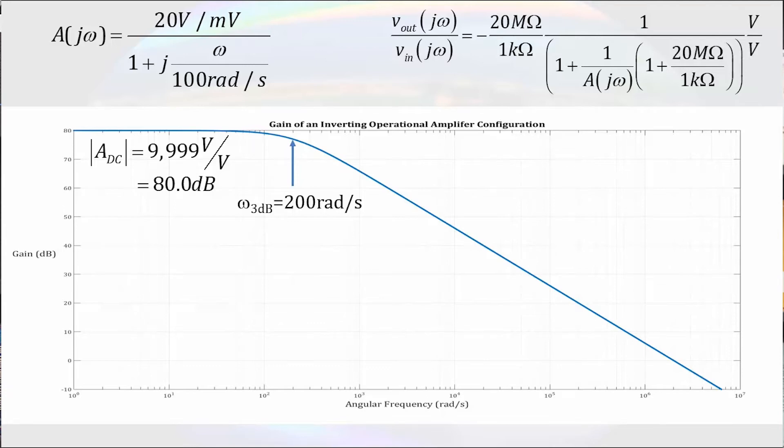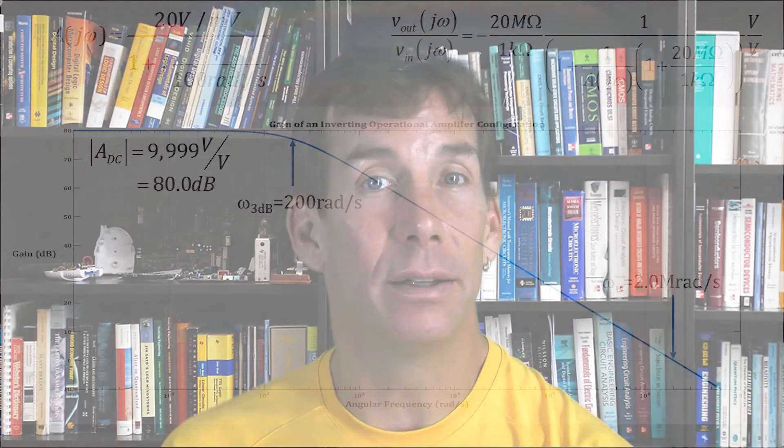If this were an audio amplifier, it would essentially filter out any audible sound. The unity gain frequency is still 2 mega radians per second. So we see the price of stability.